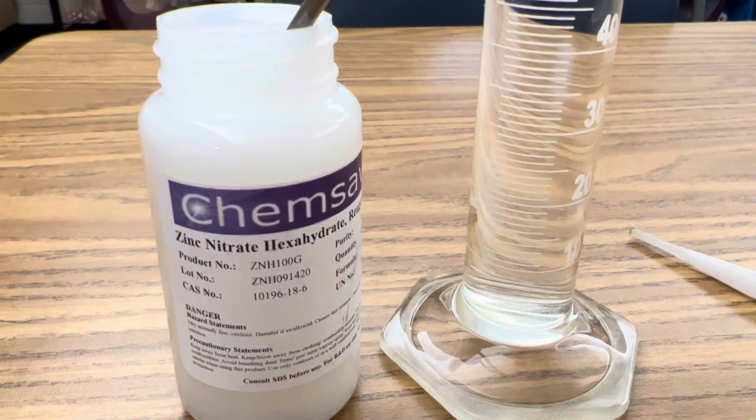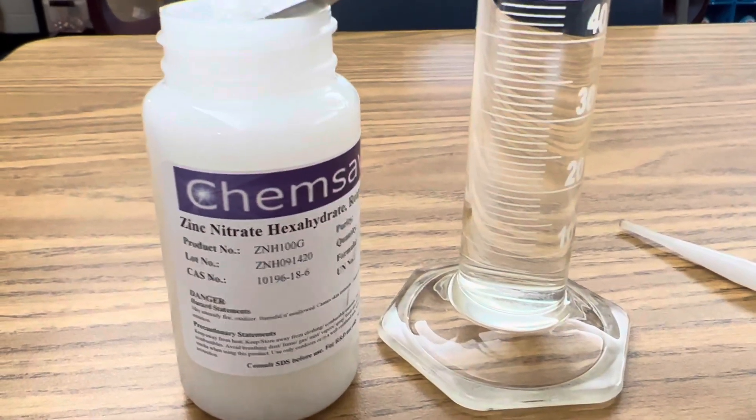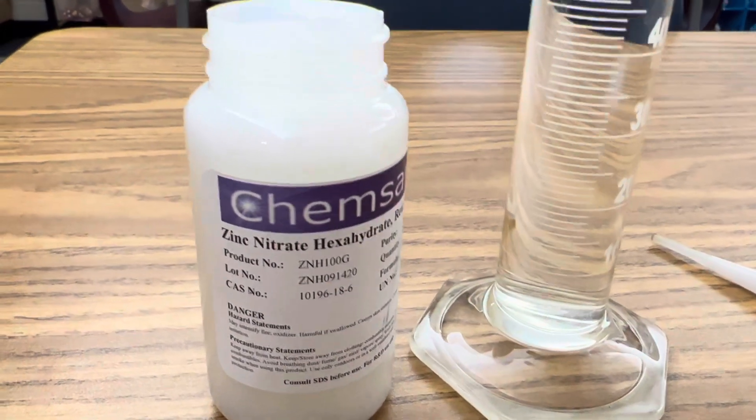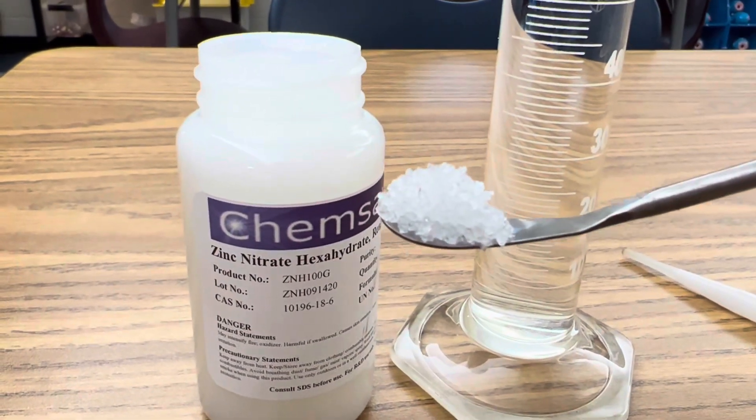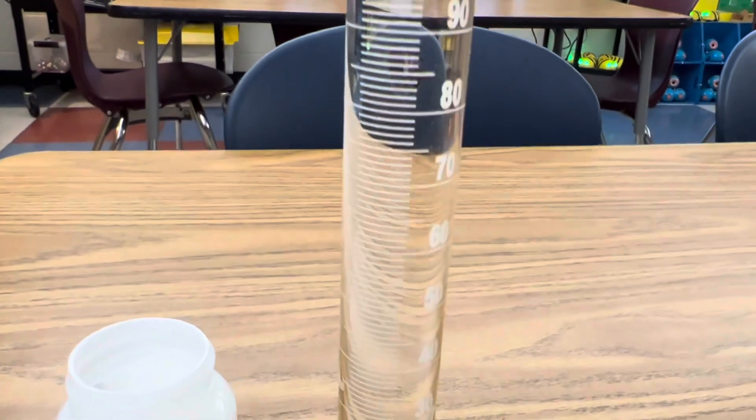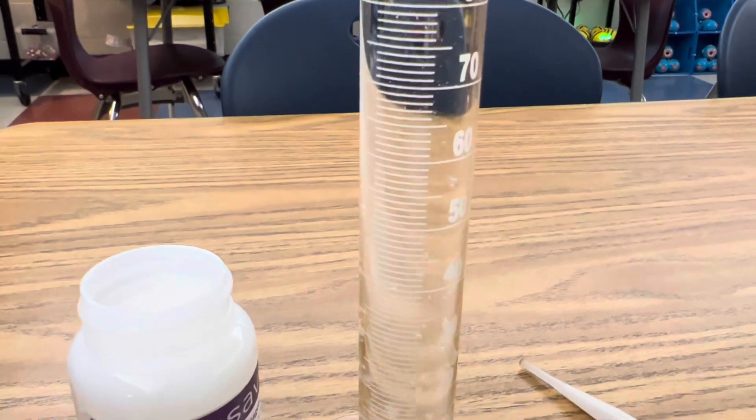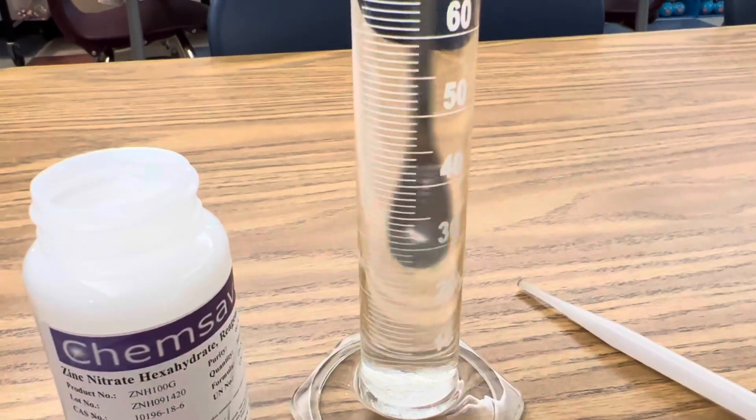Next, add four grams of zinc nitrate to 100 milliliters of distilled water in your graduated cylinder. You can see this is a white crystal. And stir your solution until it's aqueous.